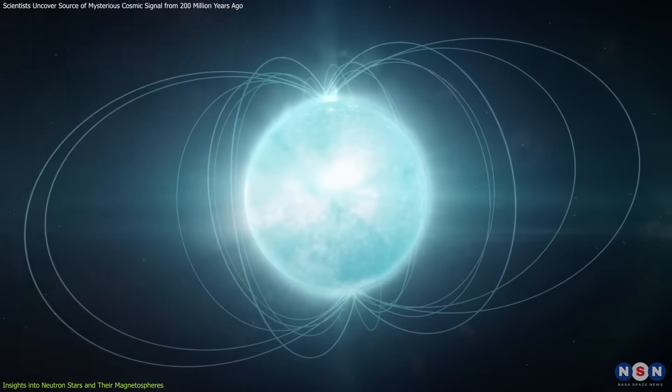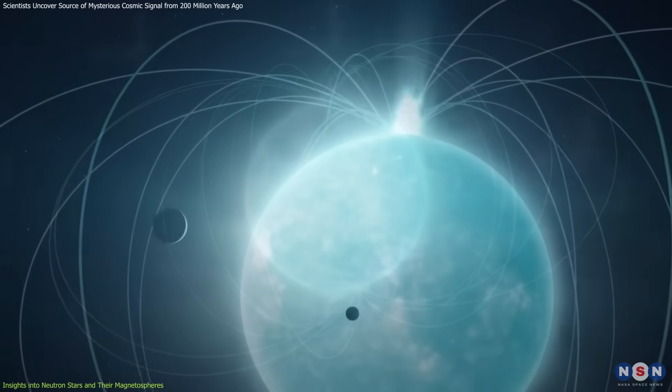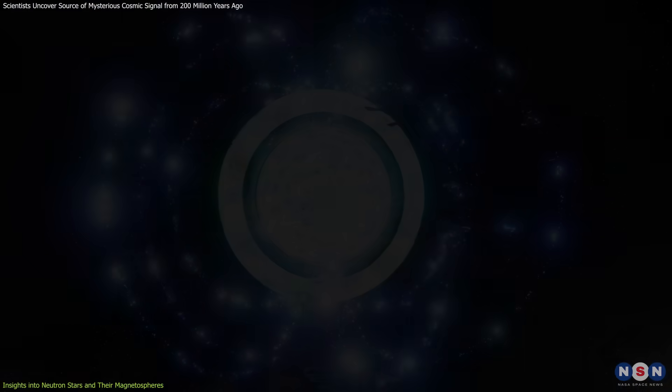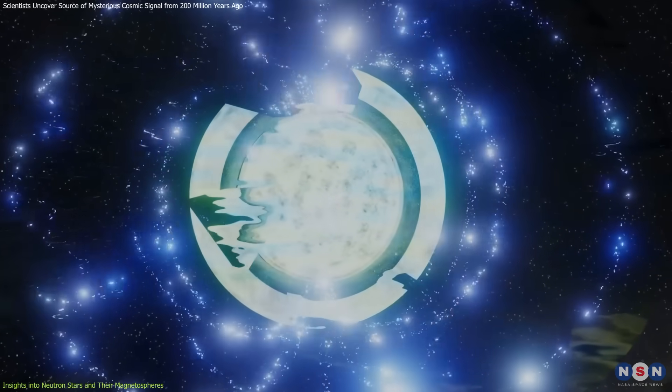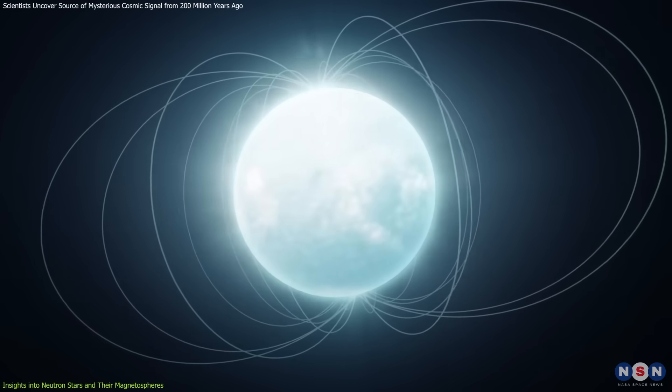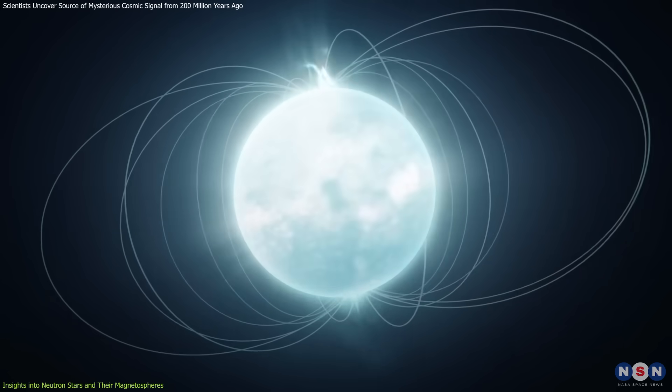Magnetars, a type of neutron star, take things to another level. Their magnetic fields are the strongest known in the universe, billions of times more powerful than the strongest magnets on Earth.